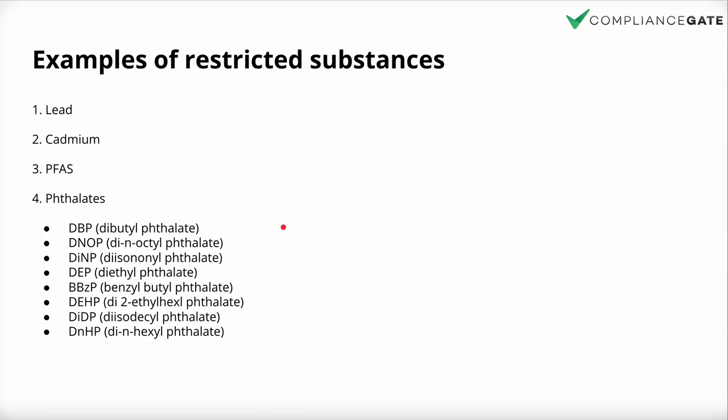A couple of examples of restricted substances: lead, cadmium, PFAS, and also the various phthalates. These are banned for all sorts of reasons — from harmful impact on human fertility, fetal development, and hormonal disruption, especially in children. There are all sorts of different reasons for restricting chemicals, and there's often also overlap between regulations, even within the EU.